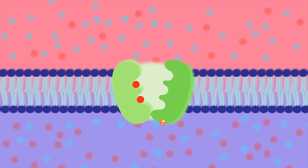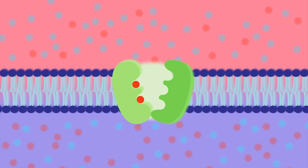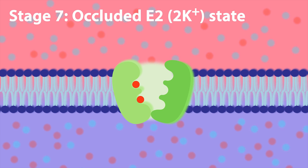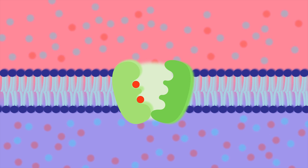This in turn promotes the transition into stage seven, which is referred to as the occluded E2 two-potassium state, during which the sodium-potassium ATPase closes or occludes the sodium and potassium binding sites.